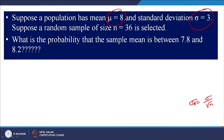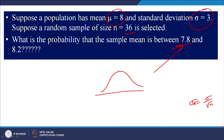We worked out one example in the previous session. In today's session we will see some more examples. Let us say you have been given population mean as 8 and standard deviation is 3. Now if we take a random sample of size 36, what is the probability that the sample mean is between 7.8 and 8.2? So the distribution would have mean equal to 8 and standard deviation equal to 3.